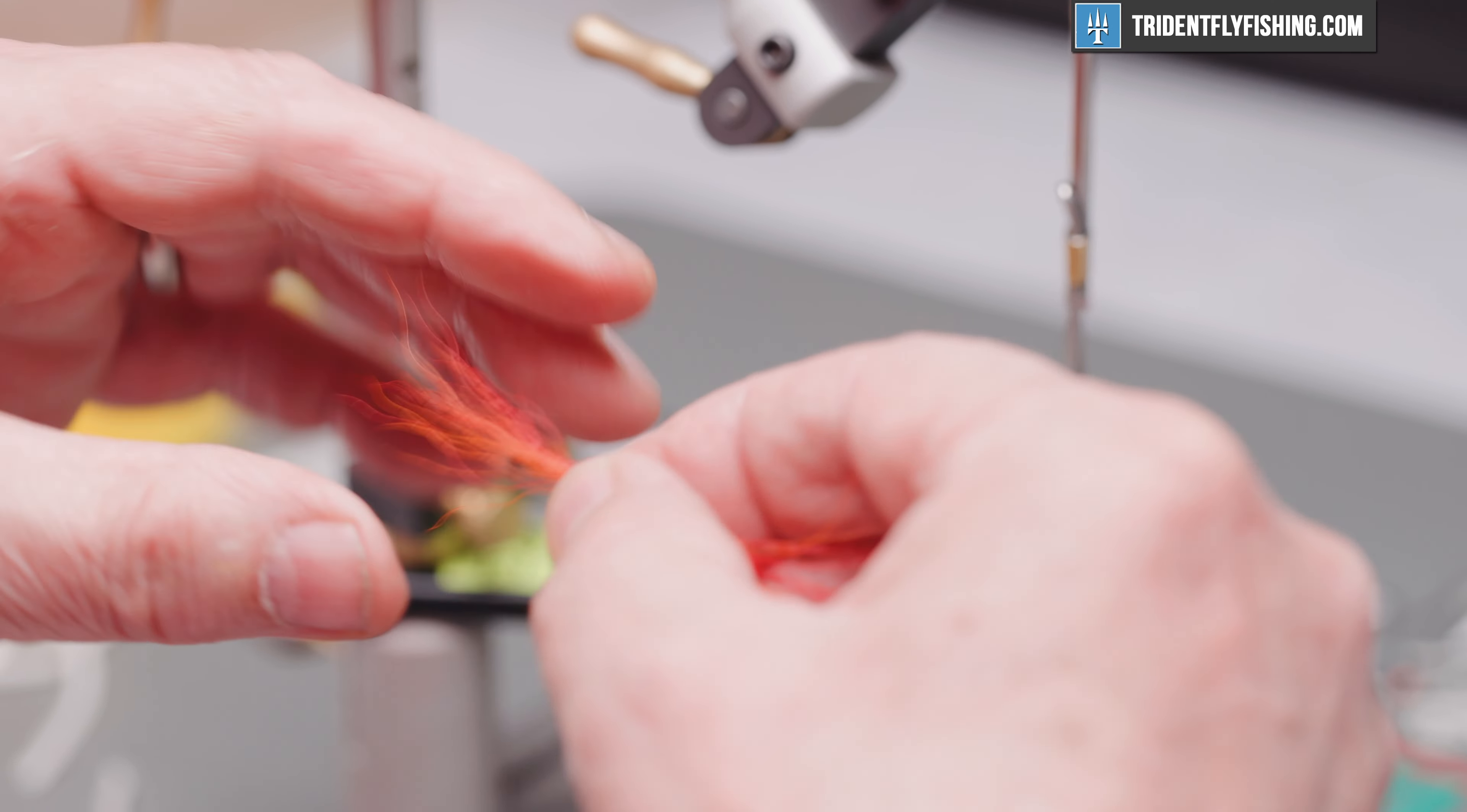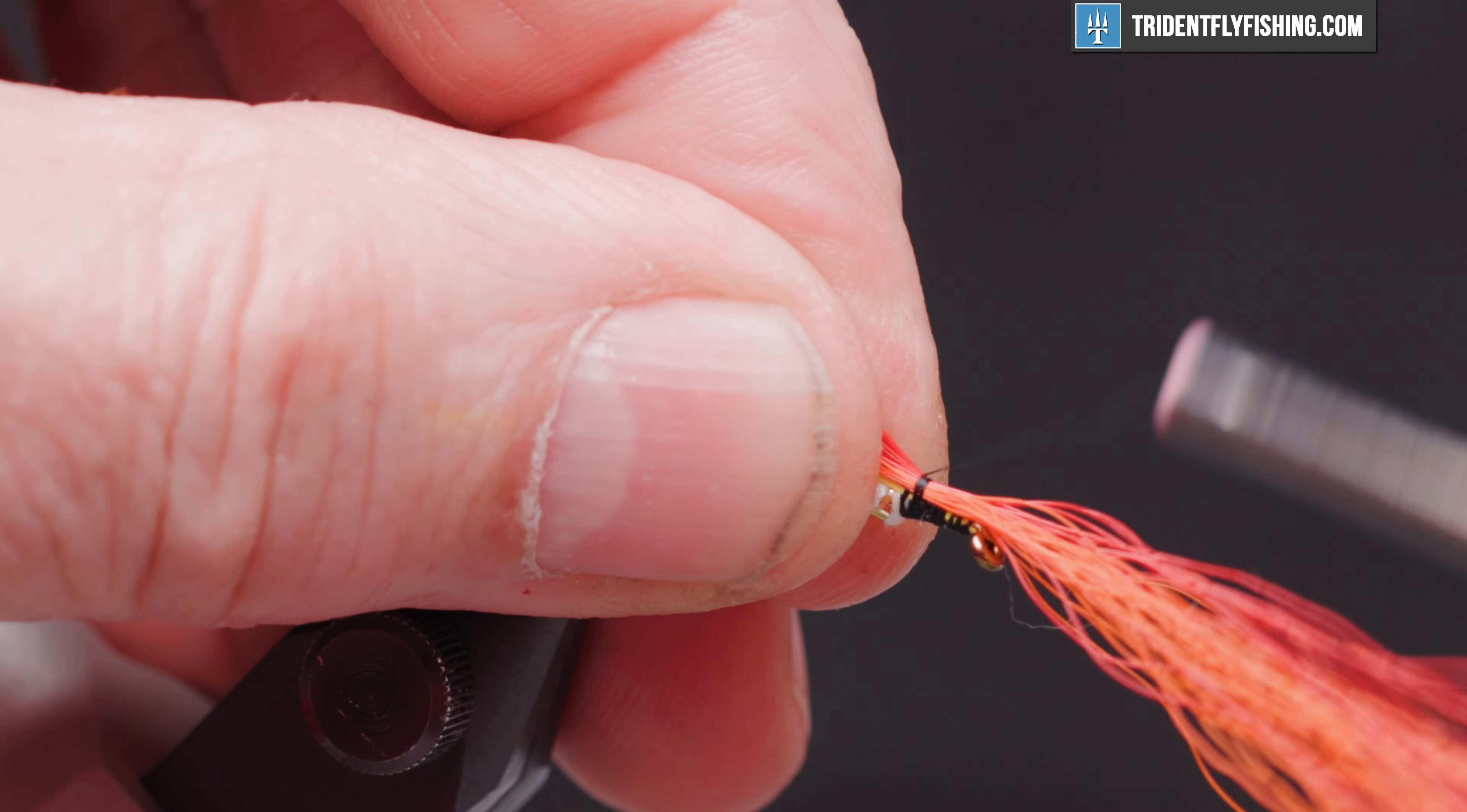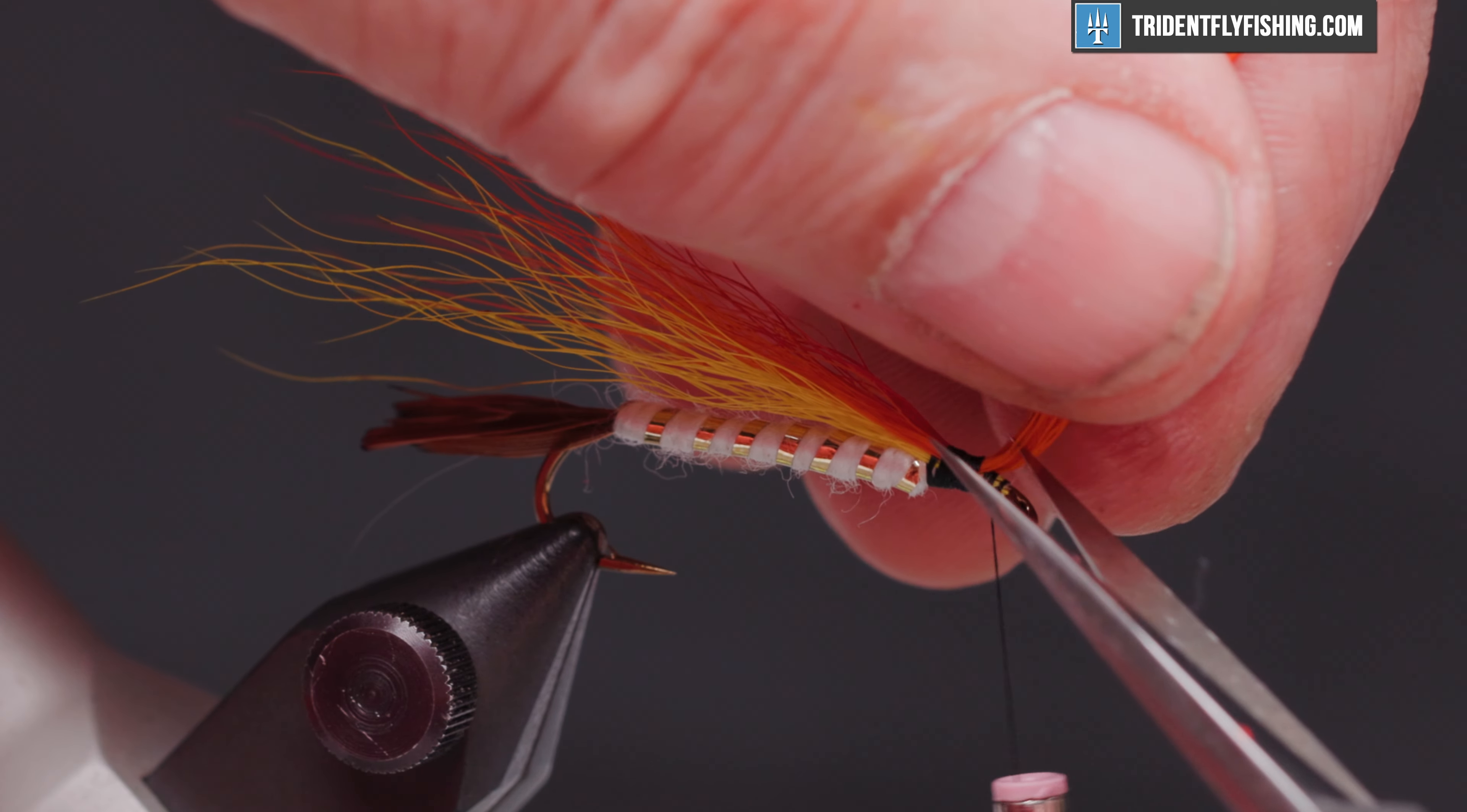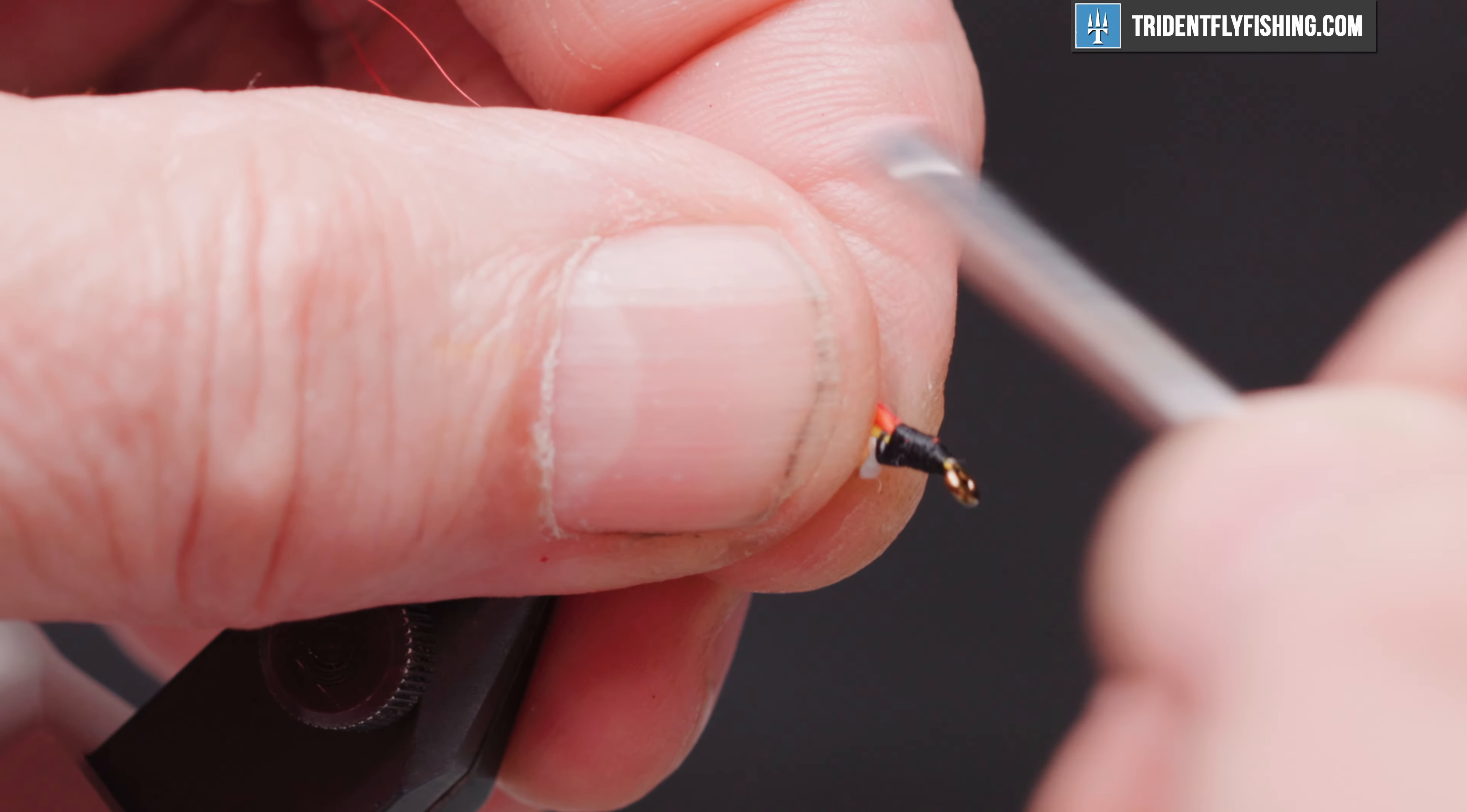So we're going to take these two colors and we're just going to kind of roll them around on our fingers to mix them up. And we're going to lay these in right on top of the yellow ones. Get rid of our excess material.